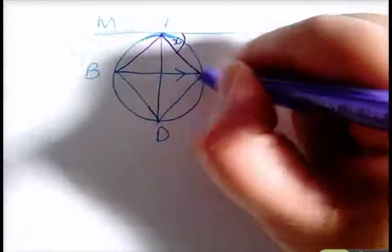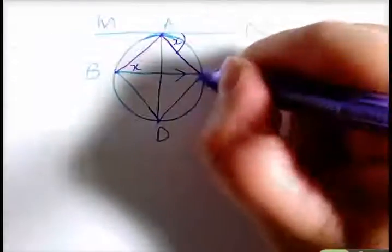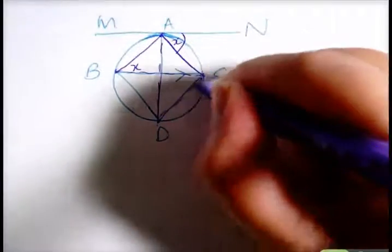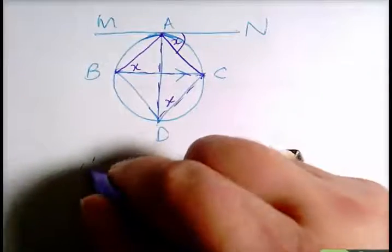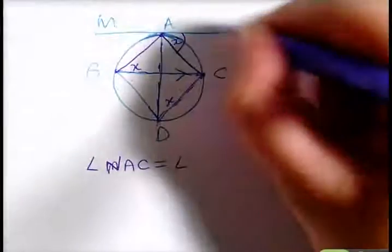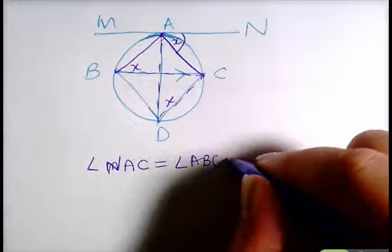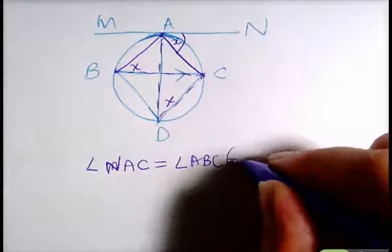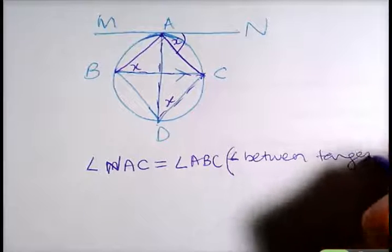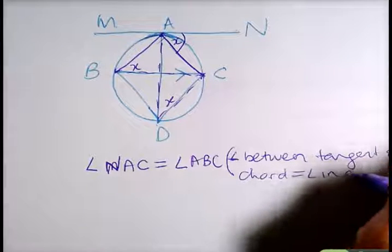The angle between the tangent and the chord would equal this angle in the alternate segment, but it would also equal this one here. So you could say that angle NAC equals angle ABC — angle between tangent and chord equals angle in the alternate segment.